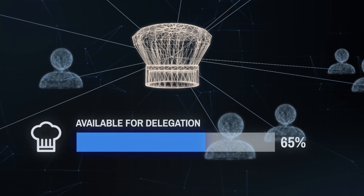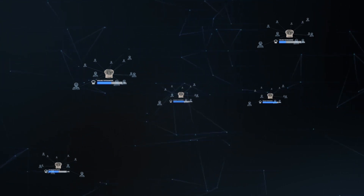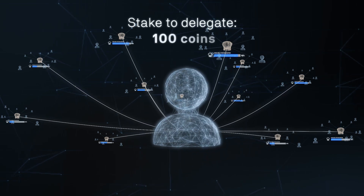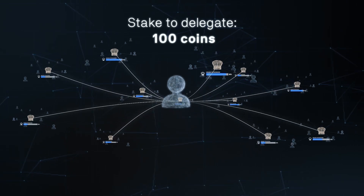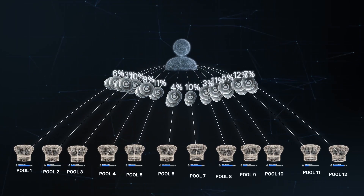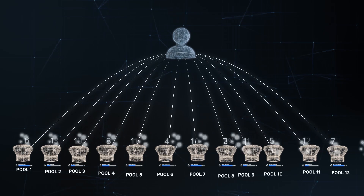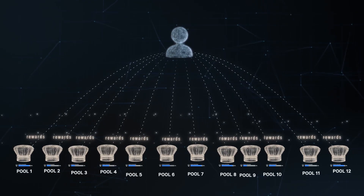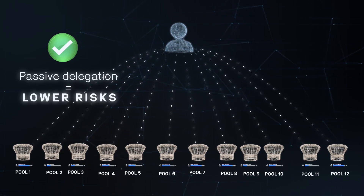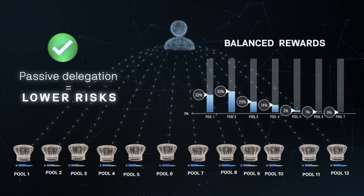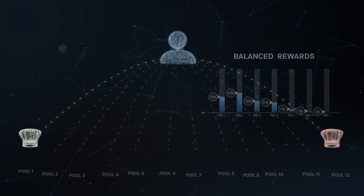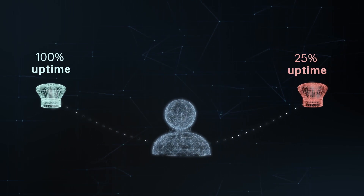Similarly to passive investment strategies that invest, for example, in an index instead of individual stocks, passive delegation is not associated with a specific baker. It can be thought of as distributing the stake to each pool in proportion to the pool's stake. Since passive delegation is not associated with a specific baker, there is no risk of poor baker health for the delegators. Furthermore, since the stake is distributed amongst all the bakers, this also mitigates the risk of a single pool obtaining too much stake via delegation and harming the system.